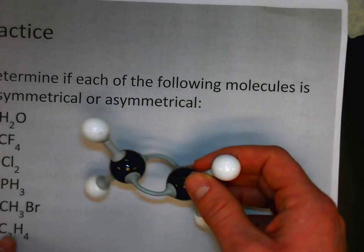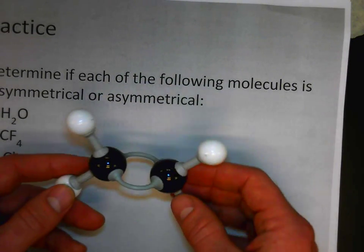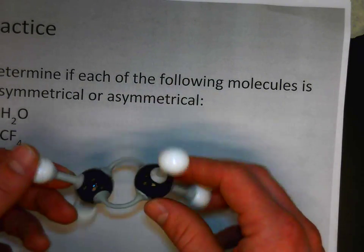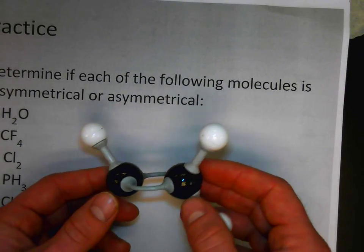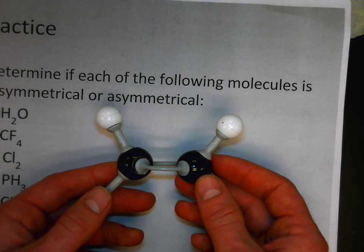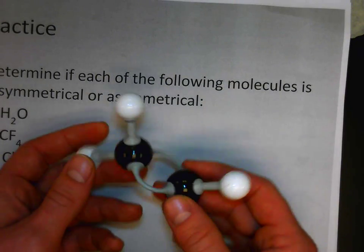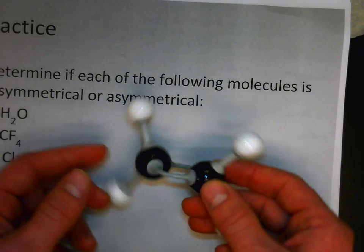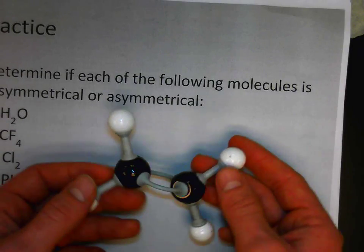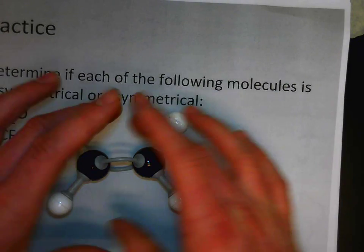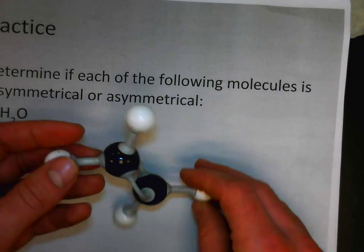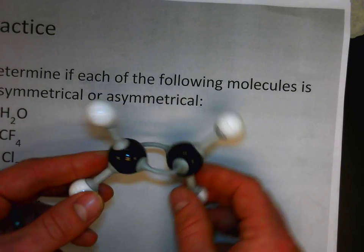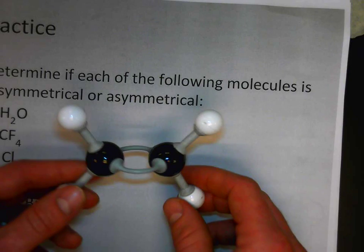C2H4. Here's a model for that. For this one, we can see once again that the electrons are going to be distributed evenly. It's symmetrical along several axes. But the main idea here is does it distribute everything evenly? And yes, this one would. So we would consider this one to be a symmetrical molecule for our purposes in chemistry.